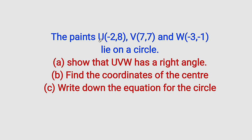The points U, V, and W with their respective coordinates lie on the circle. We are asked to show that UVW has a right angle, which is 90 degrees. We are asked to find the coordinates of the center. We are asked to write down the equation of the circle.